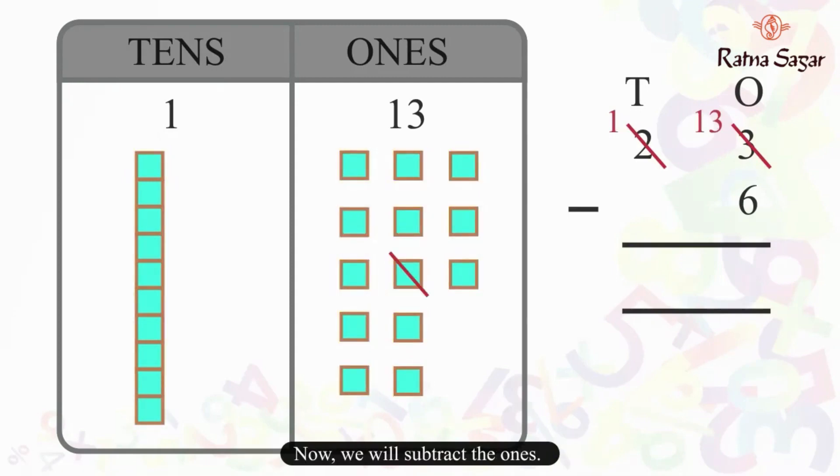Now, we will subtract the ones. We get 7. Subtract the tens. We get 1. We get 17 by subtracting 6 from 23. Hence, 17 balloons are left.